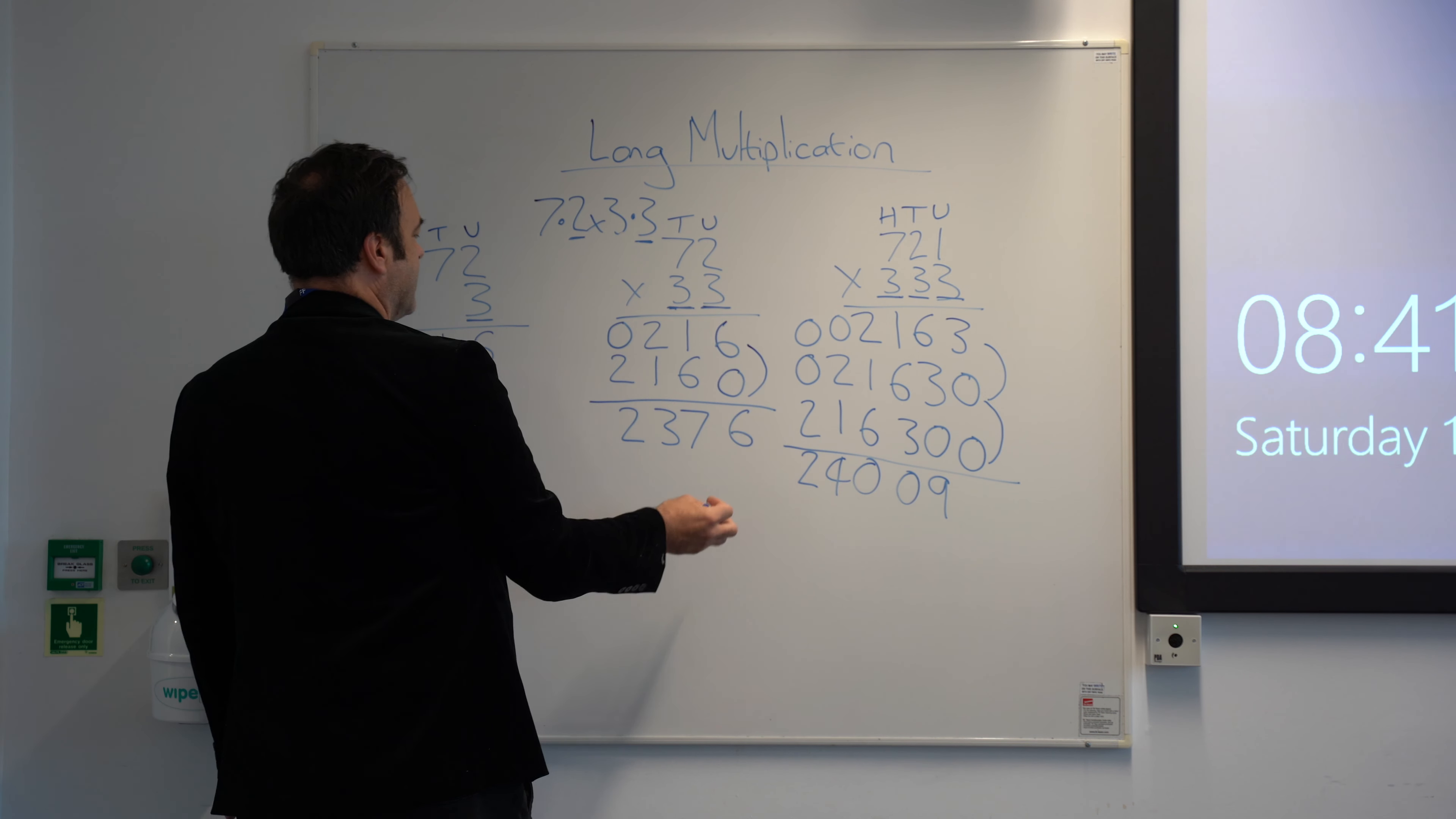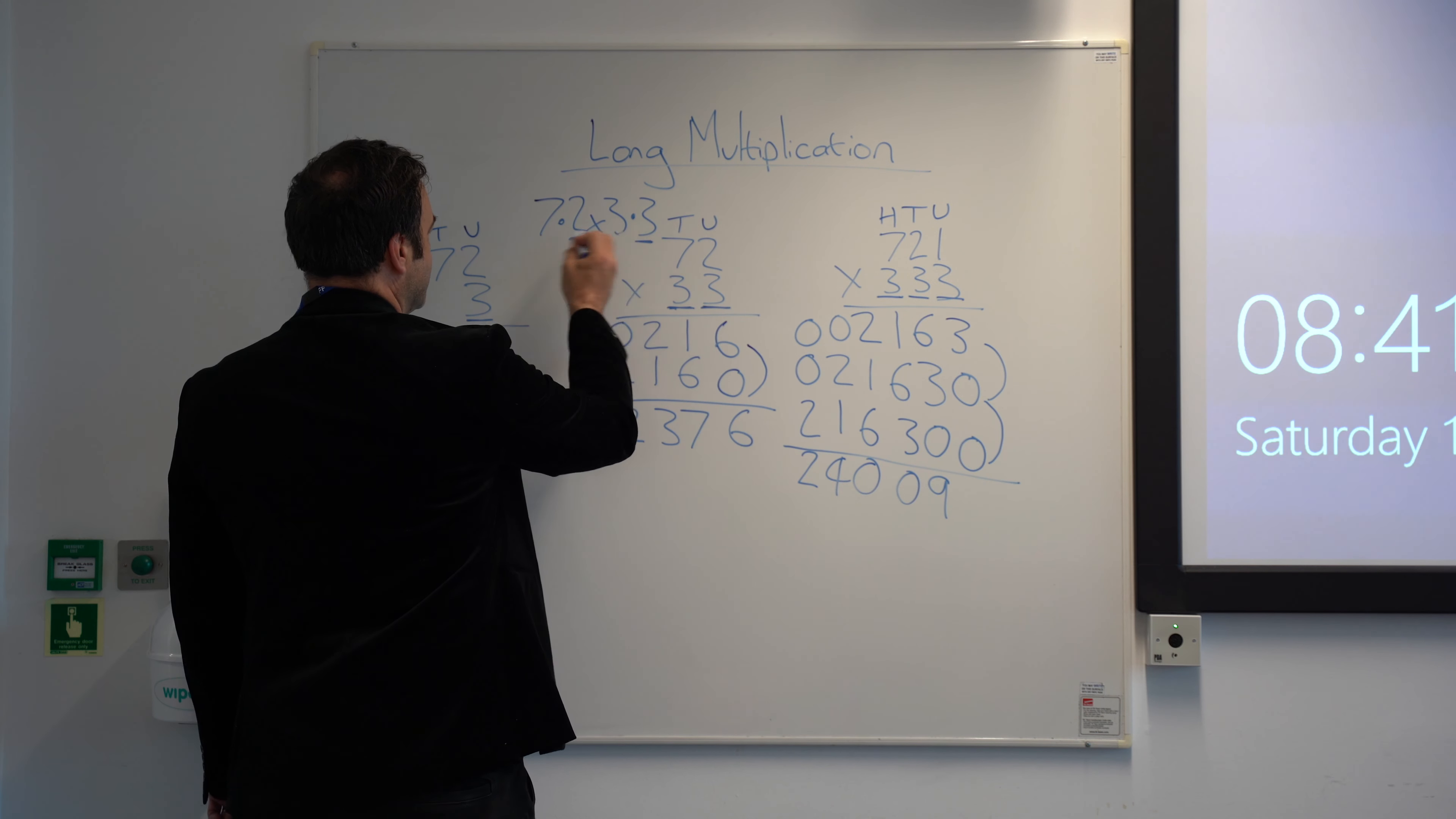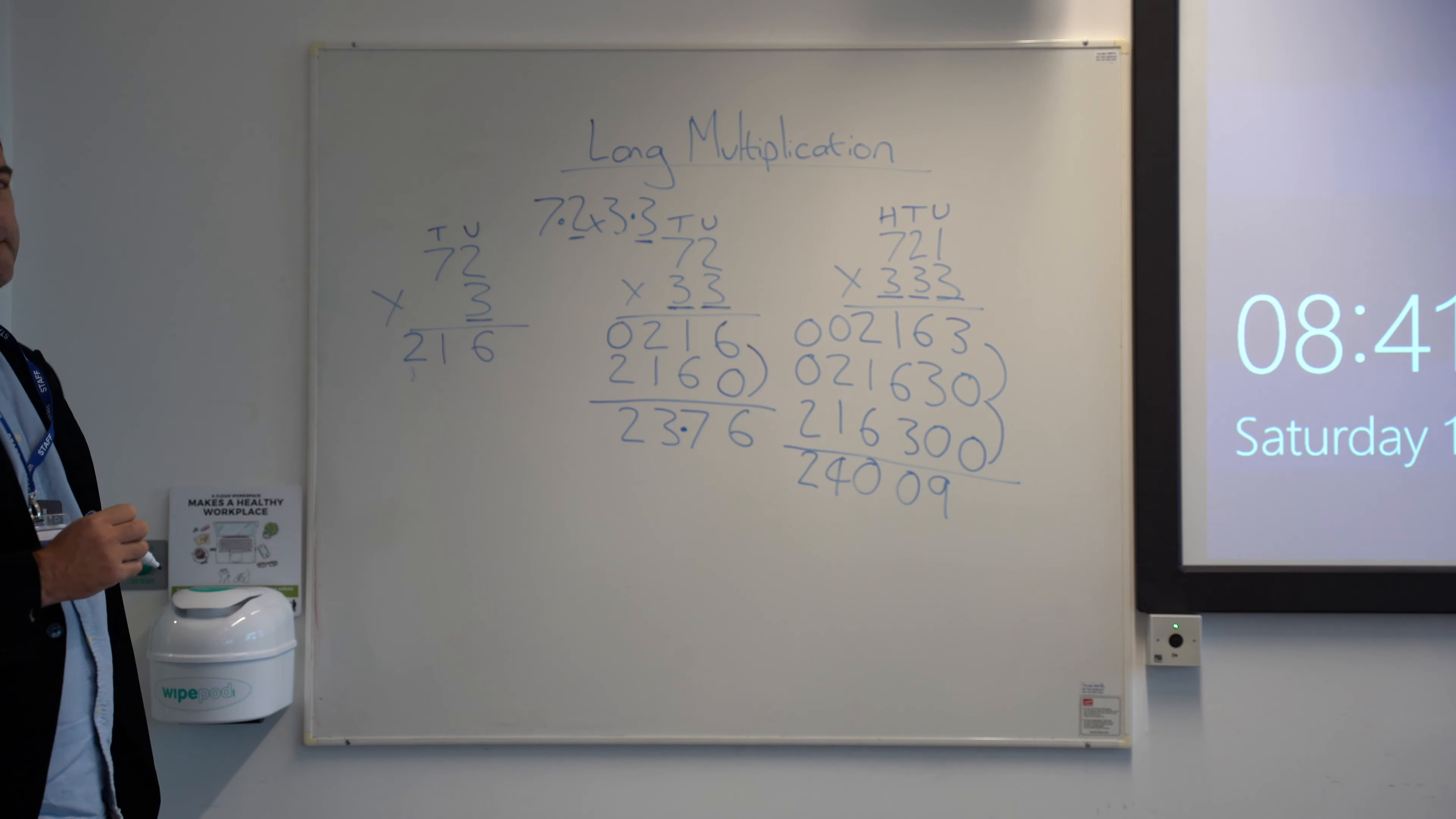So you've actually got two decimal places. So what we say is, write the thing out and bounce it back in at the end from the right, the number of decimal places in the whole question. So we've got 1, 2, 1, 2. So in that case, it would be 23.76.